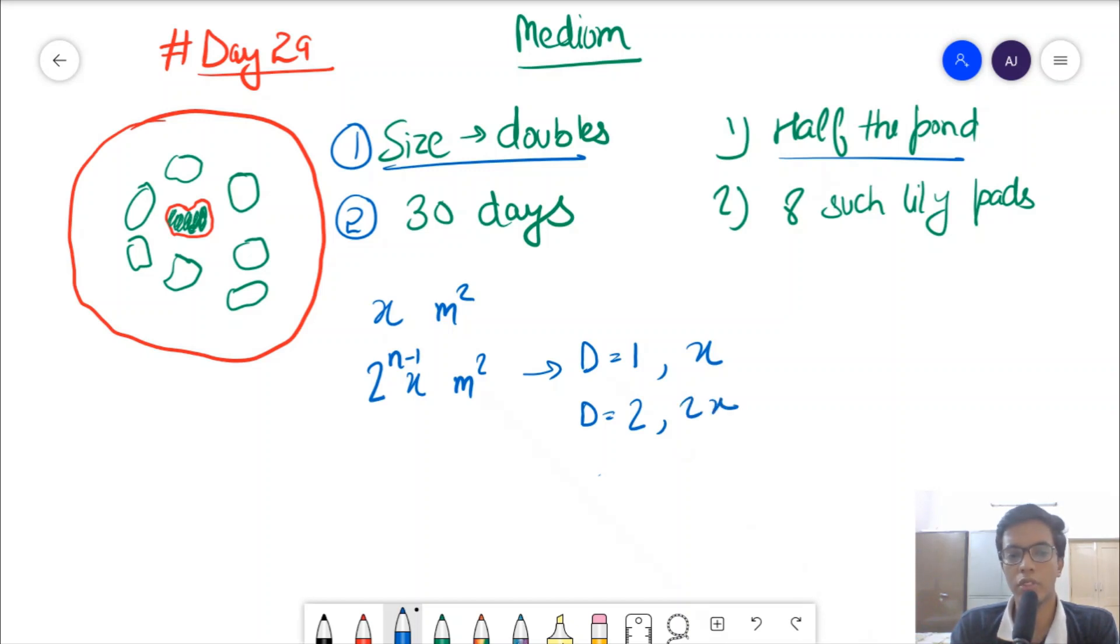When n equals 2, 2 power n minus 1 becomes 2 power 2 minus 1, which equals 2. 2 power 3 minus 1, which equals 2 square, which is 4, so 4x and so on.